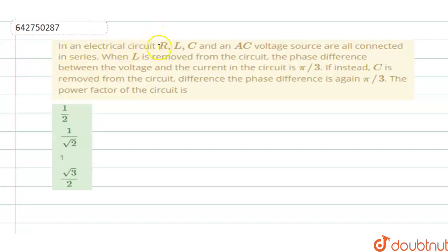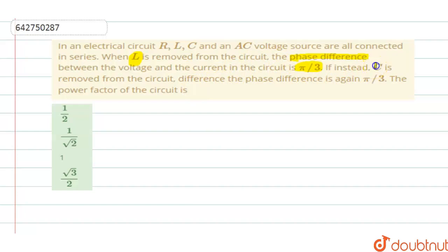In the question, they are saying that in an electrical circuit of LCR series, an AC voltage source is connected in series. When L is removed, only R and C will be working, and in that condition the phase difference of the voltage and current is π/3. Then after that, they remove C. When C is removed, L and R remain. So only when the RL circuit is remaining, the phase difference is again π/3, and you are supposed to find the power factor of the circuit.